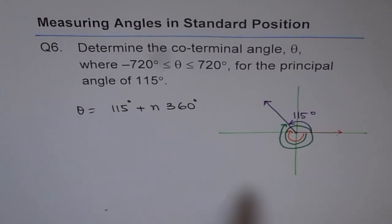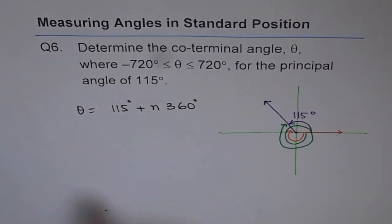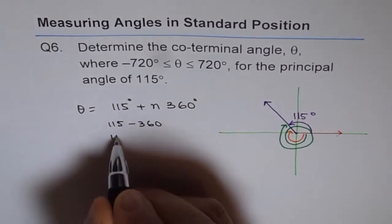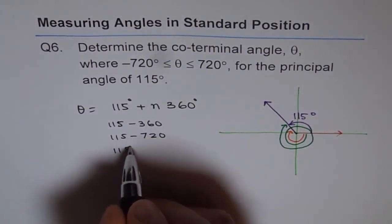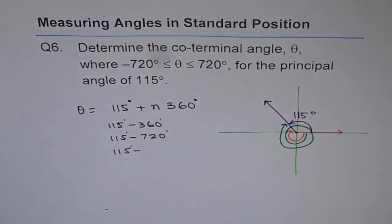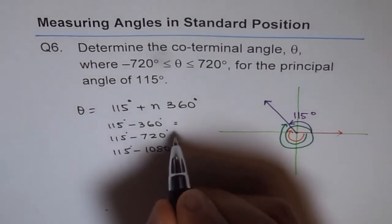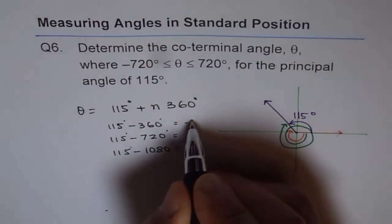Since we need all co-terminal angles between minus 720 and plus 720, let us decrease one by one. So first: 115 minus 360. Calculating this gives minus 245 degrees. Then 115 minus 2 times 360, which is 115 minus 720, and continuing: 115 minus 3 times 360 equals 115 minus 1080. So keeping on subtracting 360, we get minus 245, then minus 605.